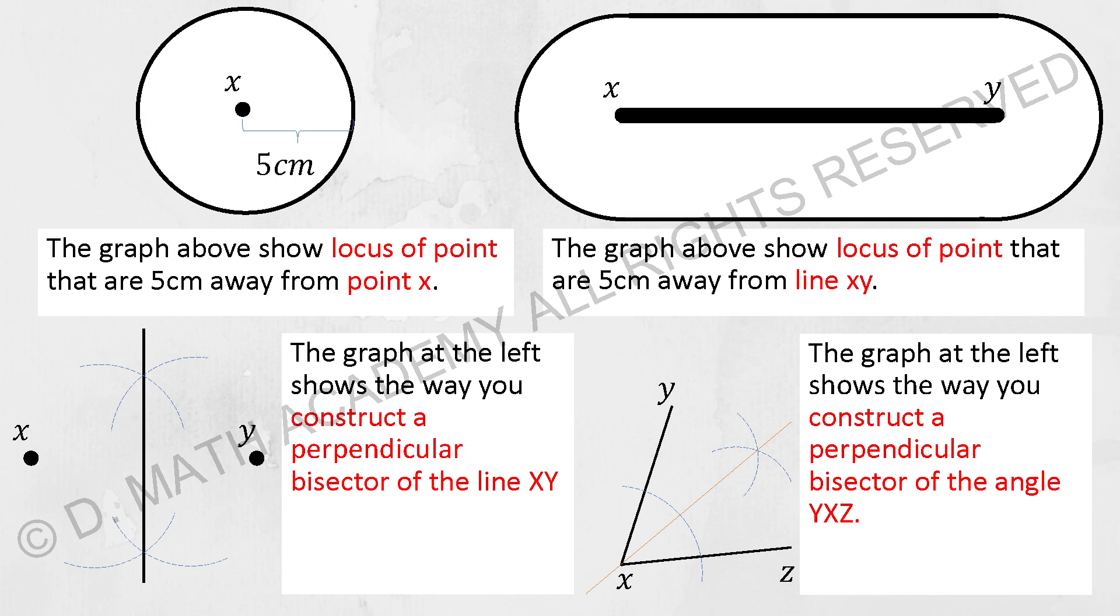The graph at the left shows you the way to construct a perpendicular bisector of XY. They gave you two points and want you to construct the perpendicular bisector. What you need to do is to pull out your compass as long as it is more than half of XY.